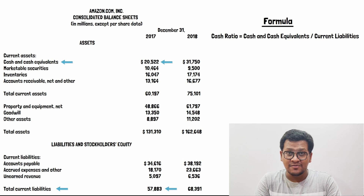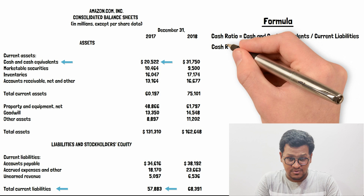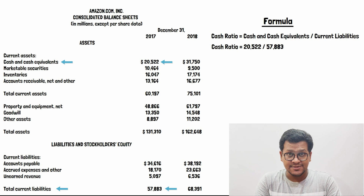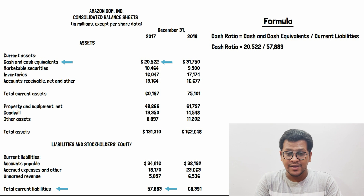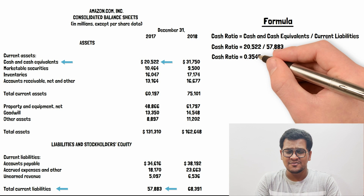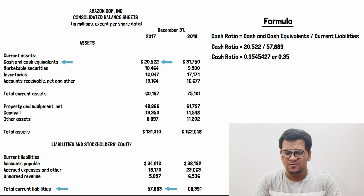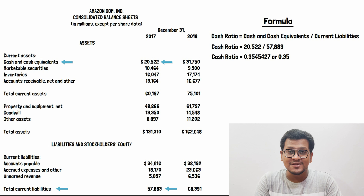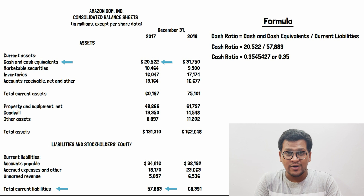If we add these items we are going to get total current liabilities amounting to 57,883 million. So now we divide 20,522 by 57,883, giving us a cash ratio of 0.3545. Rounded to two decimal places, that is 0.35. So the cash ratio of Amazon.com for the year 2017 is 0.35.